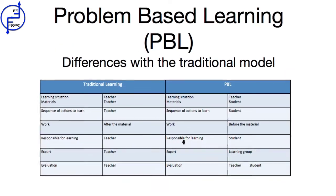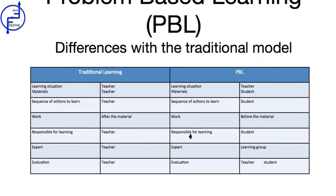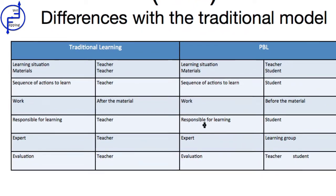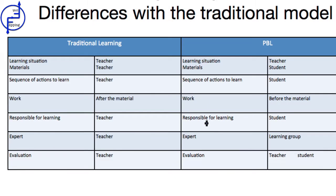The traditional teaching and learning model has multiple differences with problem-based learning, as shown in this table. In the traditional model, the learning situation and materials to be used are provided by the teacher, while in problem-based learning, the teacher presents the learning situation and the students select and generate the learning material. Additionally, the sequence of actions in the learning is marked by the teacher in the traditional method, while in problem-based learning, the student takes part in the creation of that sequence. In the traditional model, the work is done once the material has been presented, whereas in problem-based learning, the work is done before presenting the material to be learned.